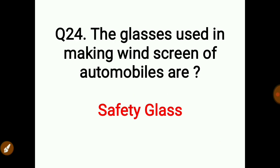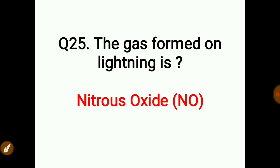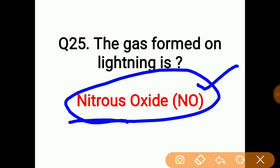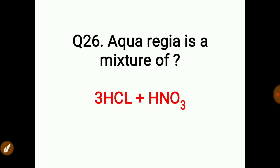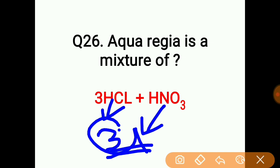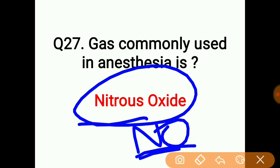The glass used in making windscreens of automobiles is safety glass. The gas formed during lightning is nitrous oxide. Aqua regia is a mixture of three parts hydrochloric acid (HCl) and one part nitric acid (HNO3). The gas commonly used in anesthesia is nitrous oxide (N2O).